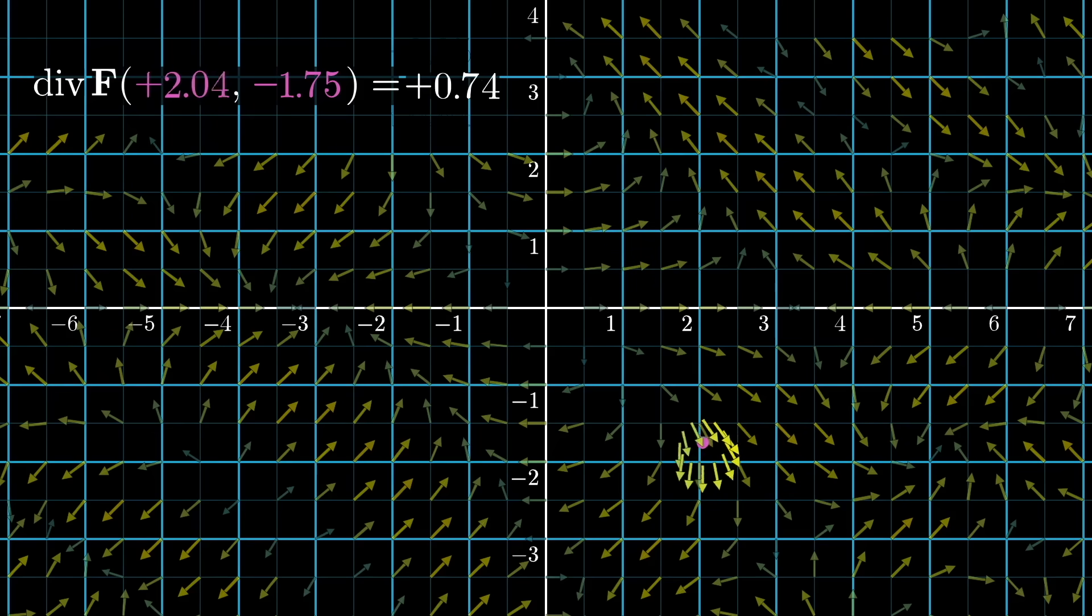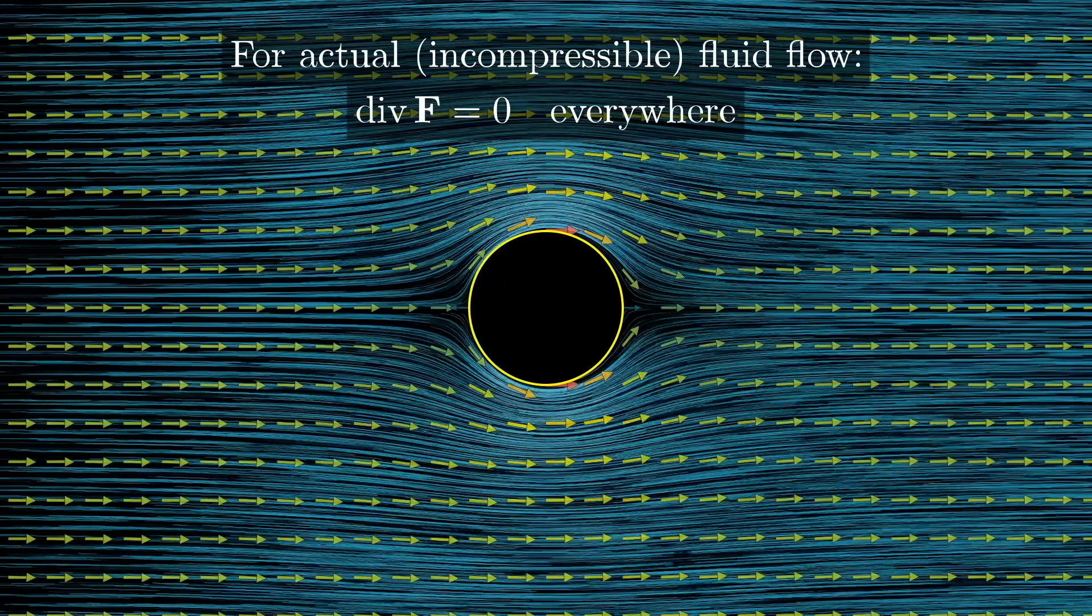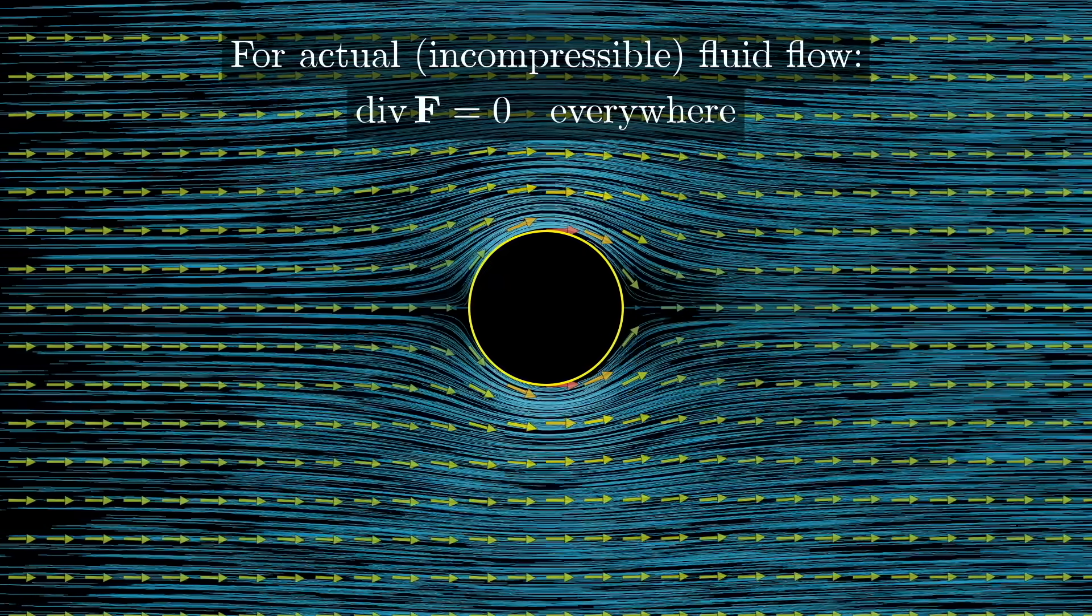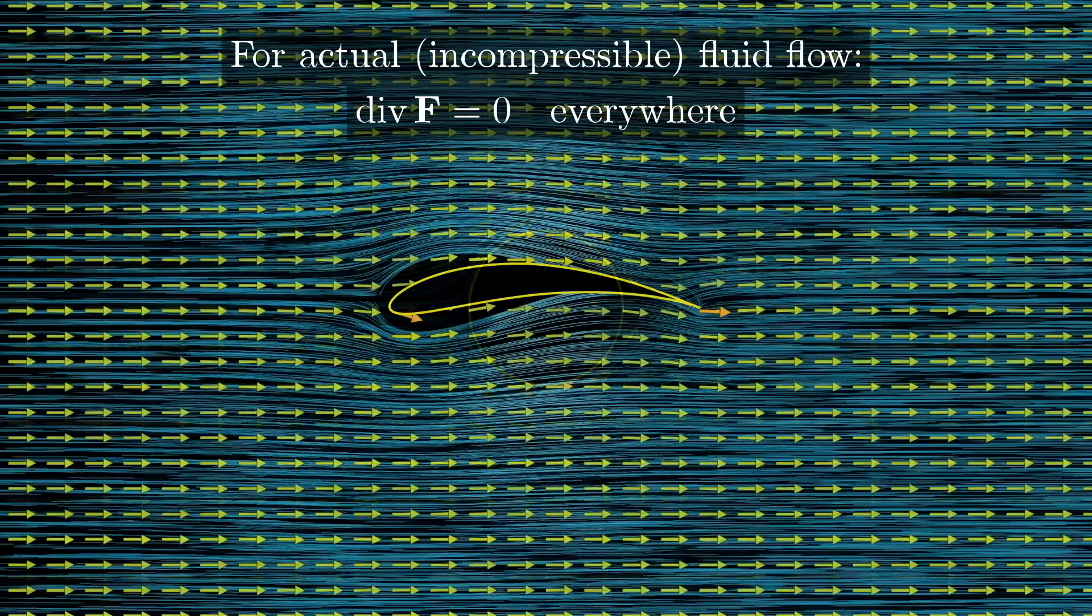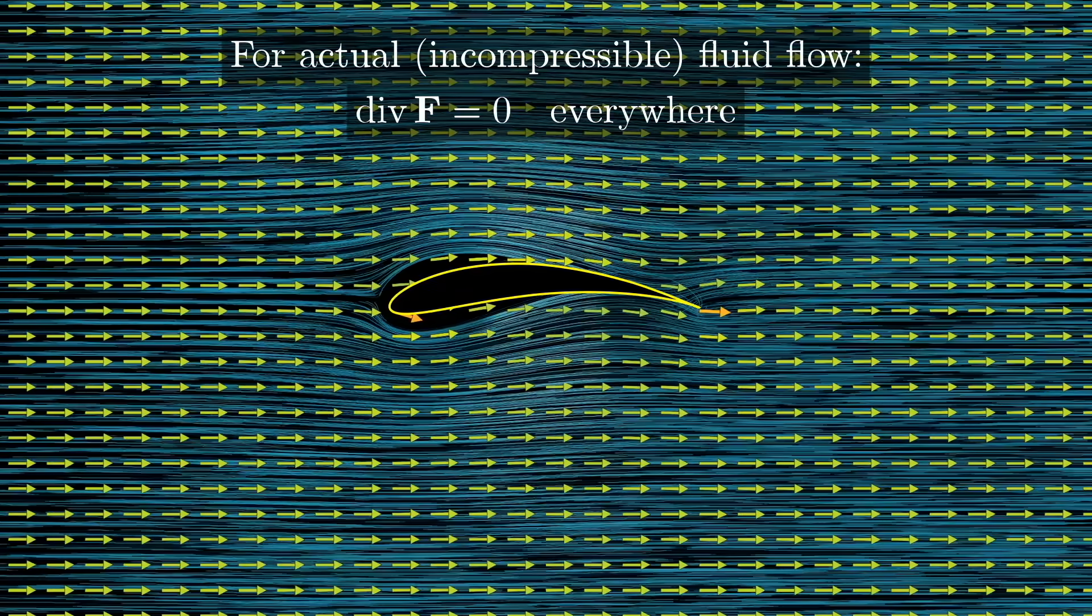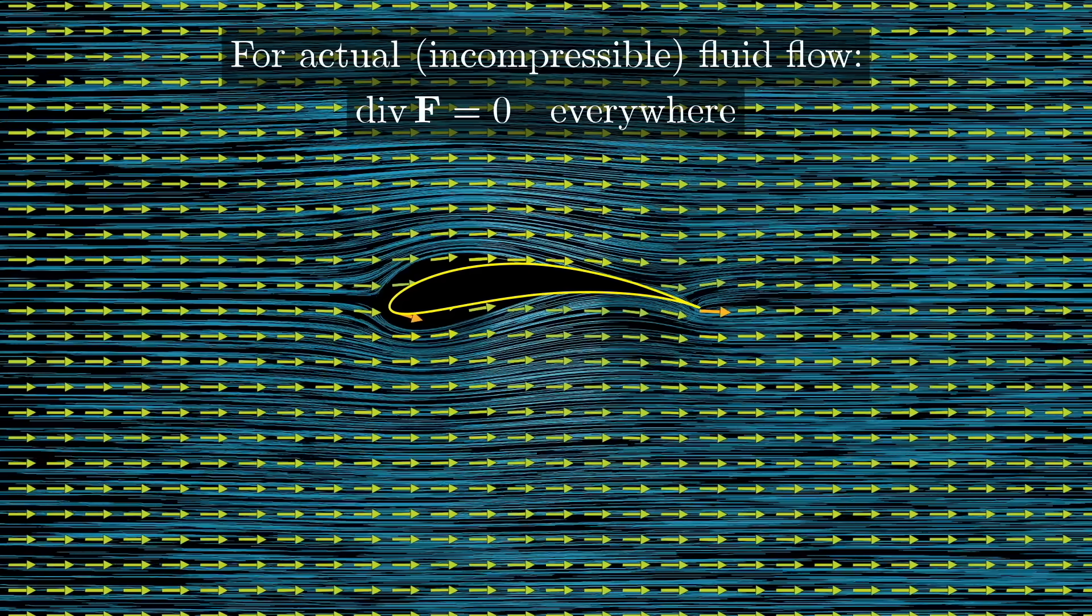I'm purposefully delaying discussion of computations here, the understanding for what it represents is more important. Notice this means that for an actual physical fluid, like water, rather than some imagined one used to illustrate an arbitrary vector field, then if that fluid is incompressible, the velocity vector field must have a divergence of zero everywhere. That's an important constraint on what kinds of vector fields could solve real-world fluid flow problems.